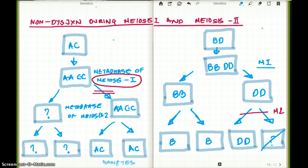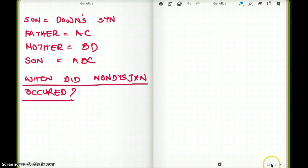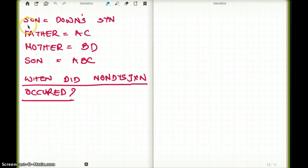So those are the two different types of disjunction. Now let's talk about an example. In this example, the son has Down syndrome. The father had a genotype of AC, and mother had a genotype of BD. Now the question stem is asking, when did nondisjunction really occur? Because obviously the son has A, B, and C. There is an extra chromosome more than it should be in a normal individual.